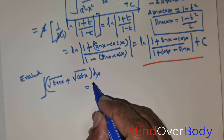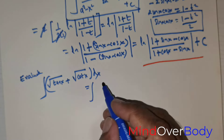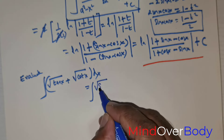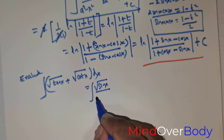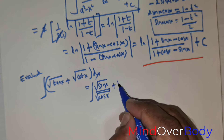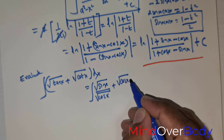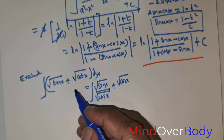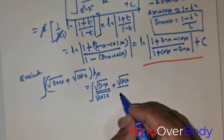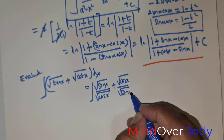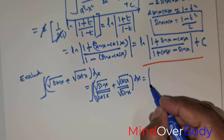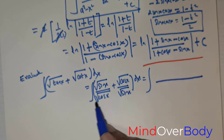I'll rewrite tan x as sin x over cos x, so √(tan x) becomes √(sin x) divided by √(cos x). And since cot x equals cos x over sin x, √(cot x) becomes √(cos x) over √(sin x). So the integral becomes the integral of [√(sin x)/√(cos x) + √(cos x)/√(sin x)] dx.